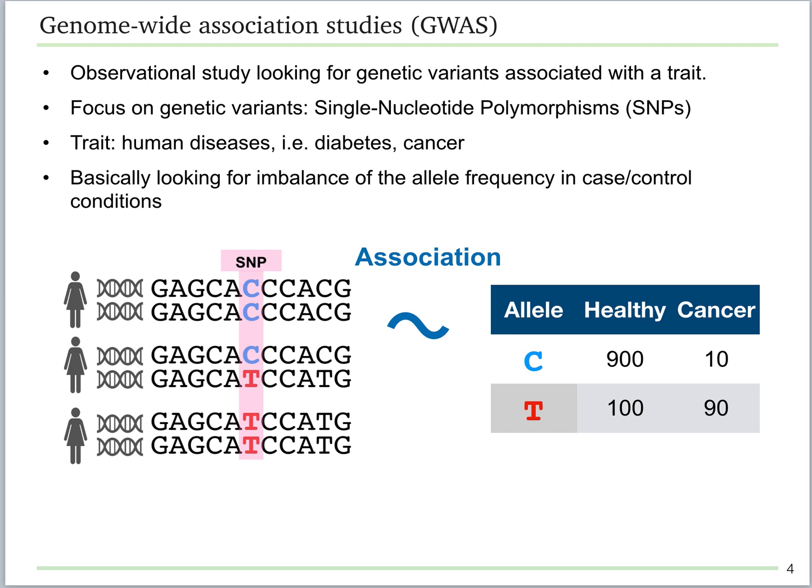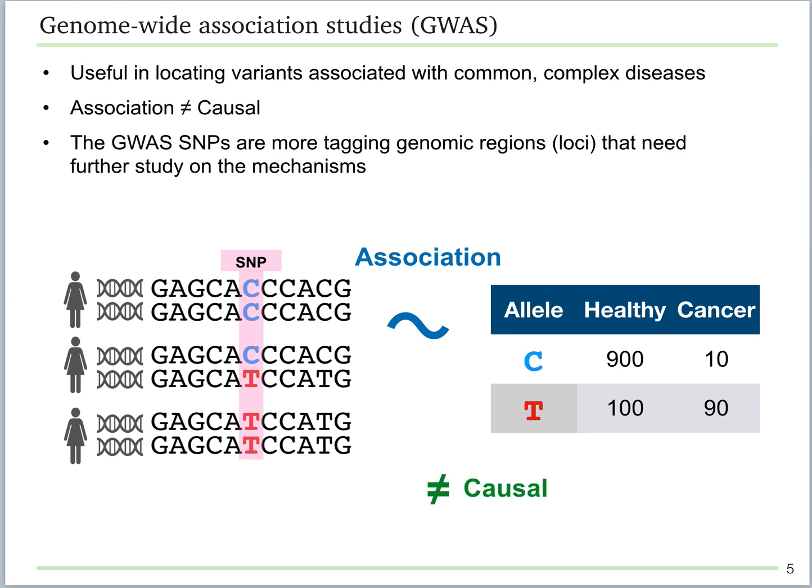This approach has been useful in the past decade in locating SNPs related to complex and common diseases. However, keep in mind that the associations don't imply causal relationships. Instead, the GWAS SNPs are more tagging certain genomic regions, or loci, and need further investigation on the biological mechanisms behind.